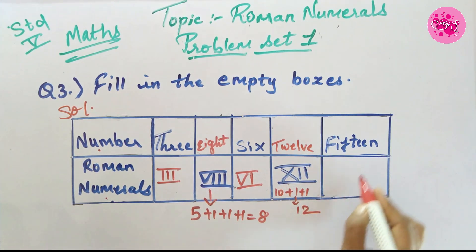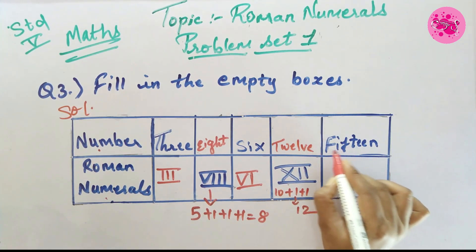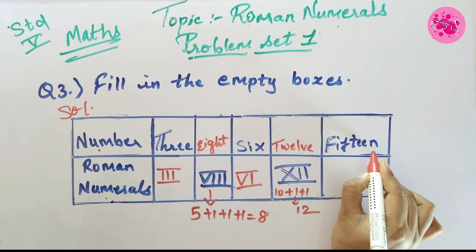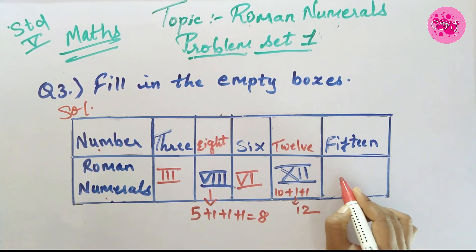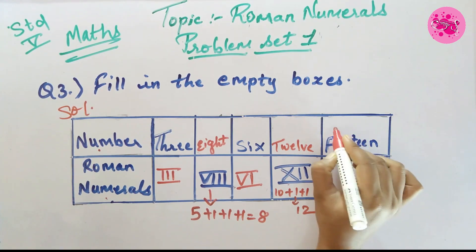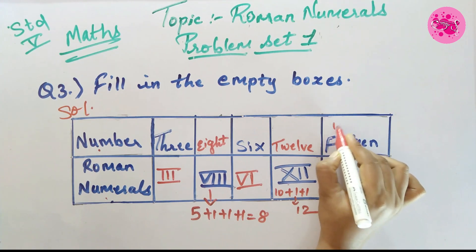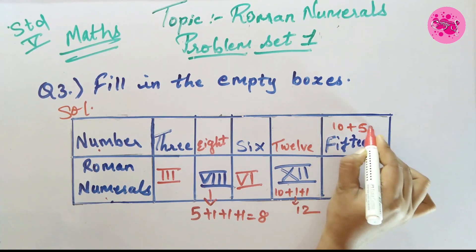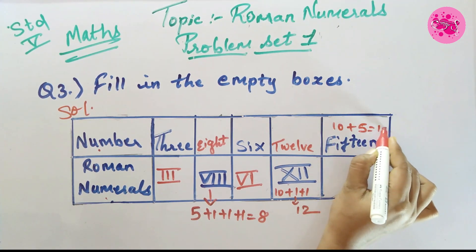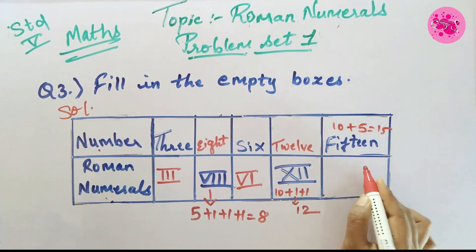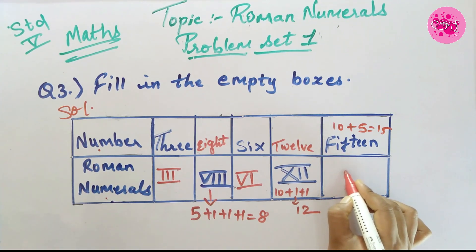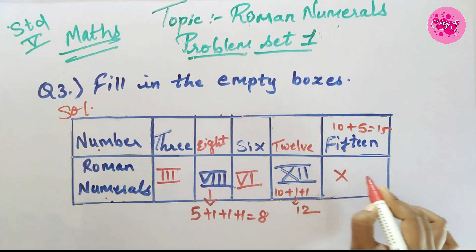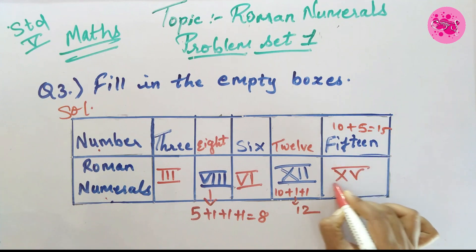Next, the number 15 is given and we have to write the Roman numeral. Since 10 plus 5 equals 15, we write XV (X and V).